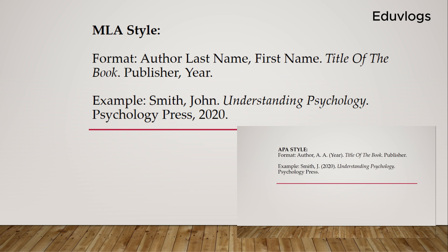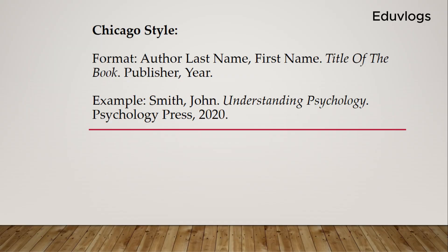The Chicago style for referencing a single authored book is simply writing the author's last name, the first name, title of the book, publisher, and the year. This looks more like the MLA style. So you write the author's surname — for example, Smith — then John in full, then the title of the book, then Psychology Press, and then the year.